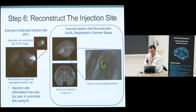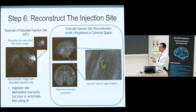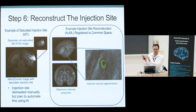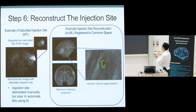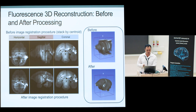In this NanoZoomer slide scanner, the experimenters wanted to capture very faint tracer signal, which sometimes saturated the injection site. What they did was take separate images of the injection site at lower exposure. We can take these separate images, isolate the cell bodies, and map them back into the 3D reconstruction then into the common space, recovering the injection site volume. You can also see where the brain was punctured.